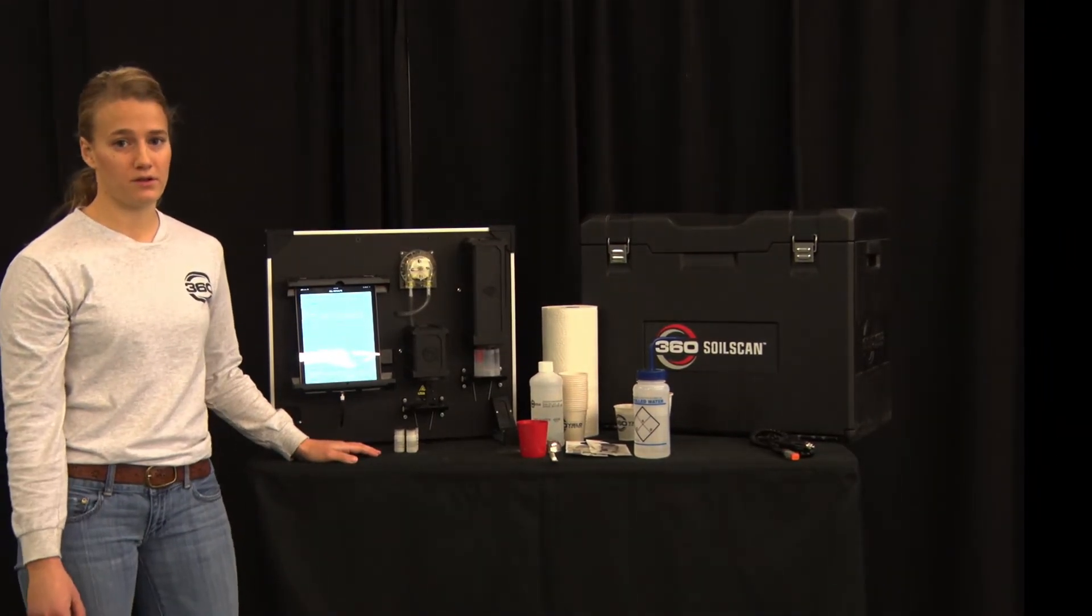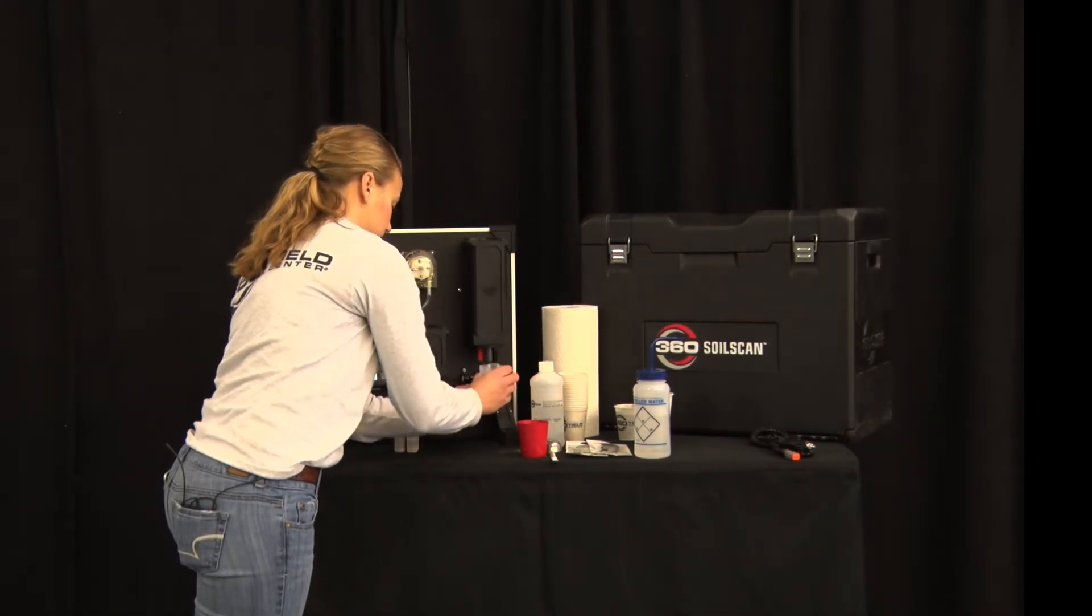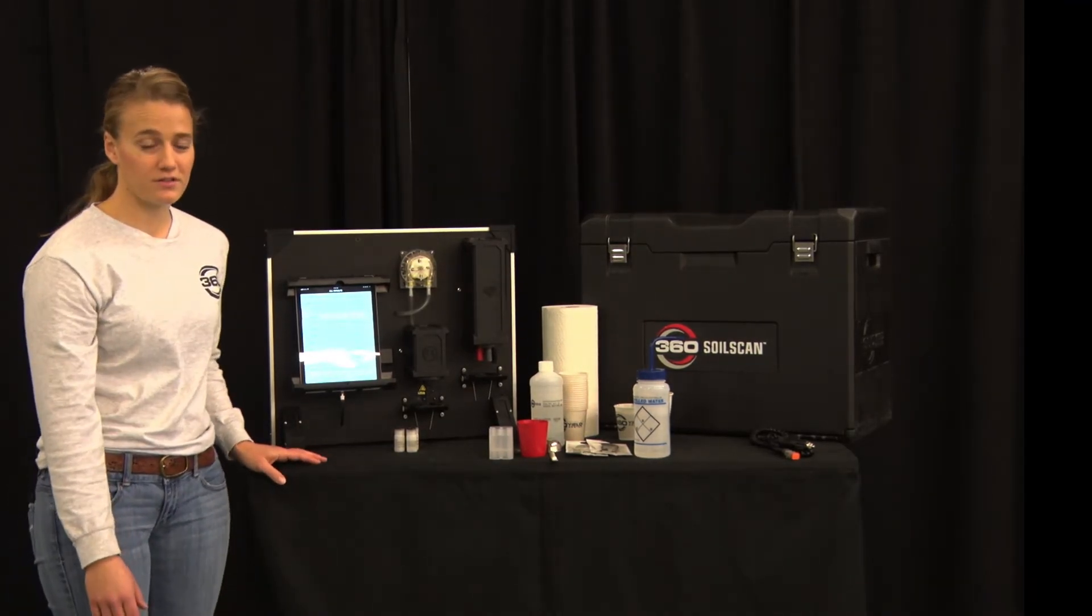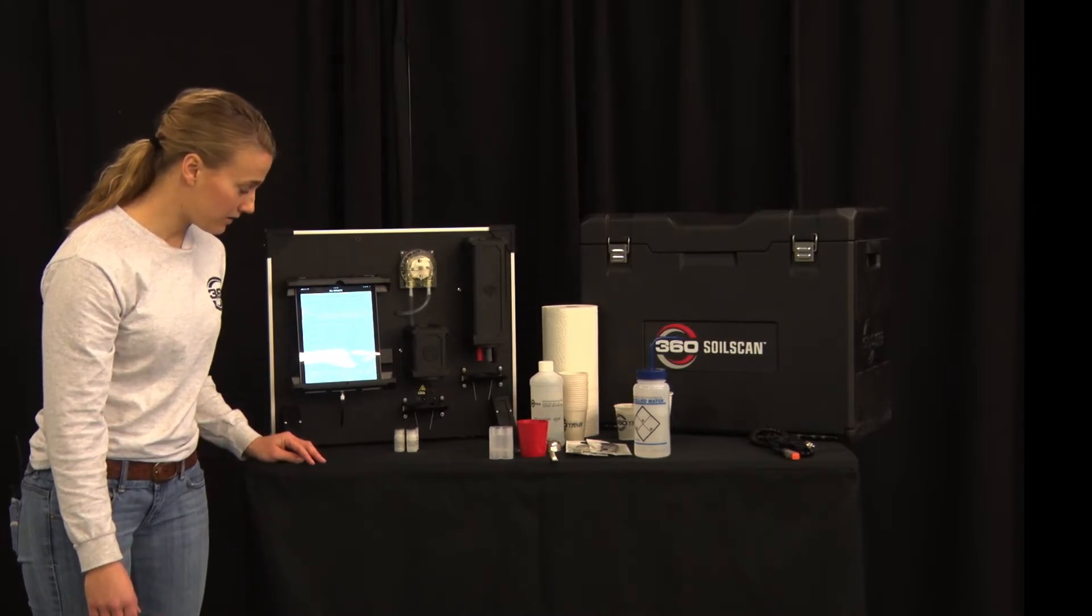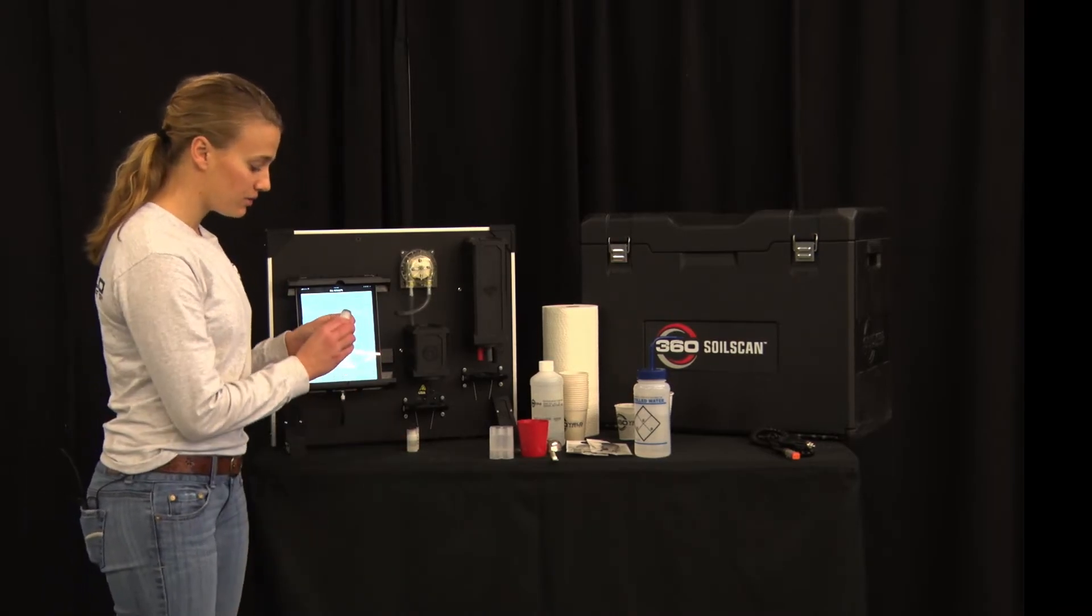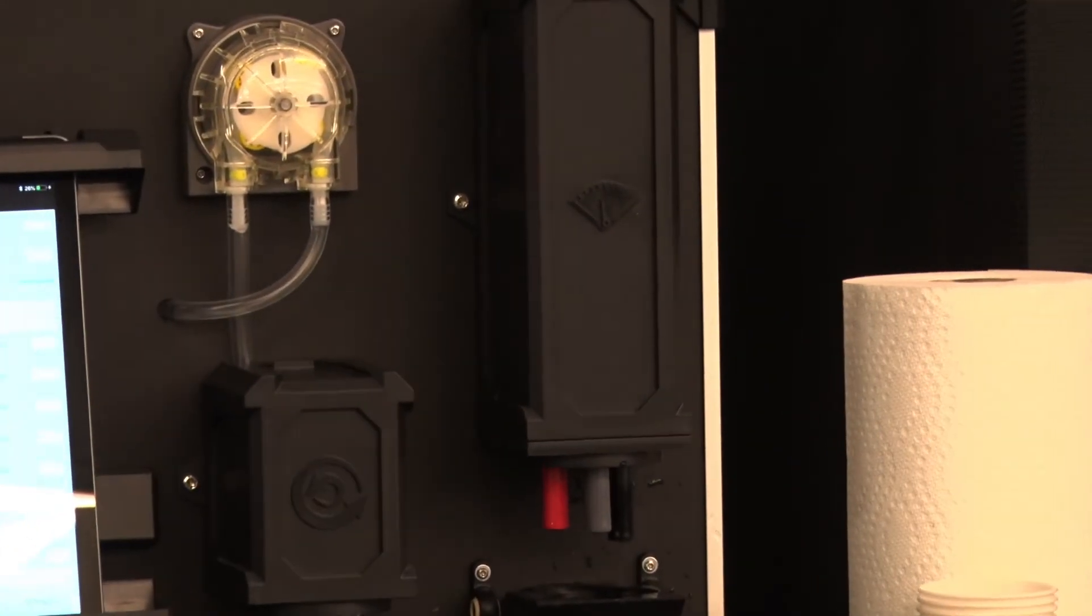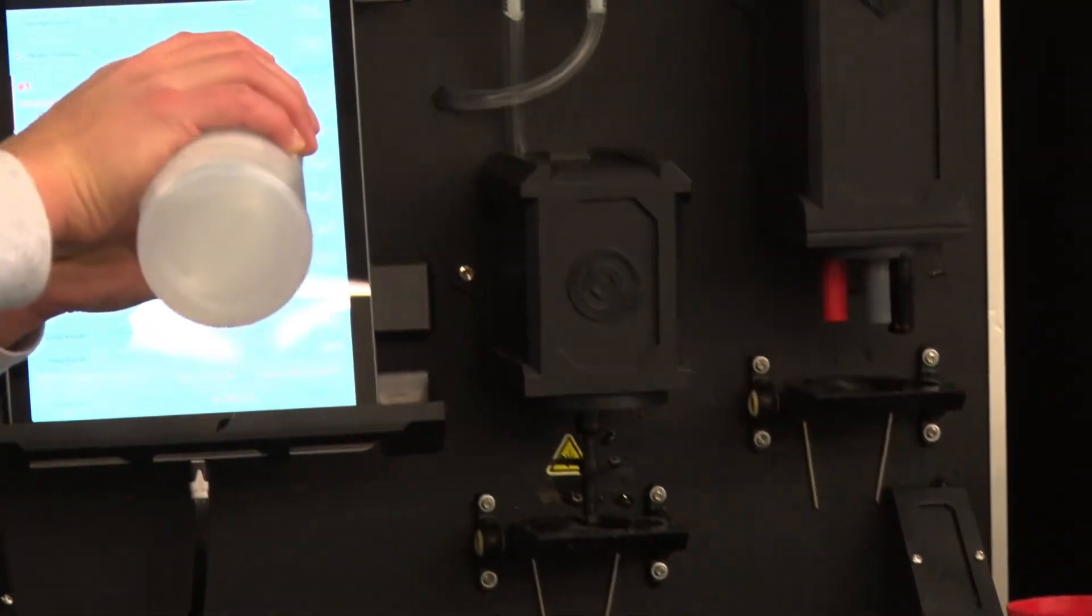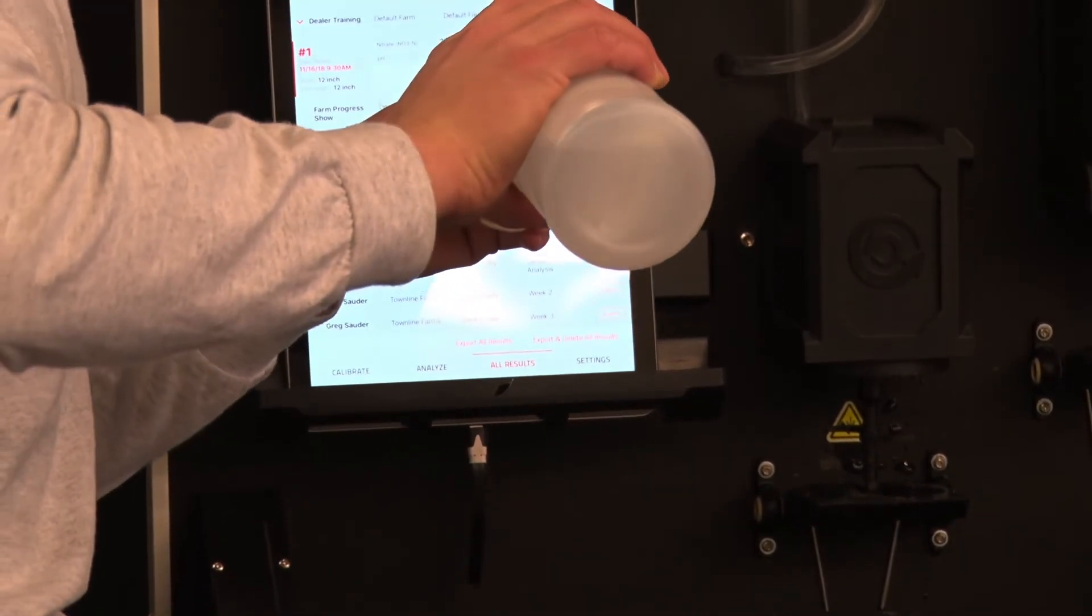If you're putting your soil scan away for the year you'll want to put them into long-term storage. The gray nitrate sensor will be stored dry. The red reference sensor and the black pH sensor will both be stored with solution. Each of the bottles outline this on them. Place nitrate solution in the reference tip long-term storage bottle and the pH sensor long-term storage bottle.